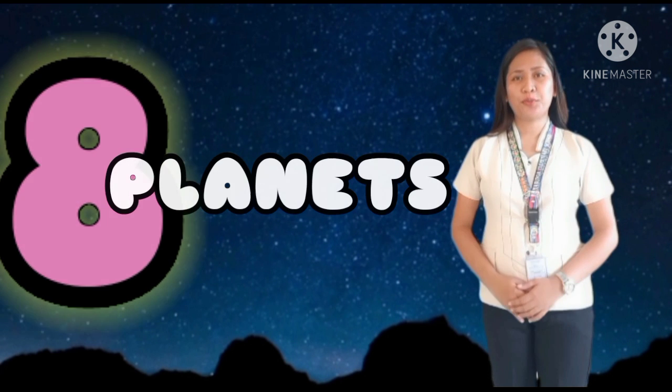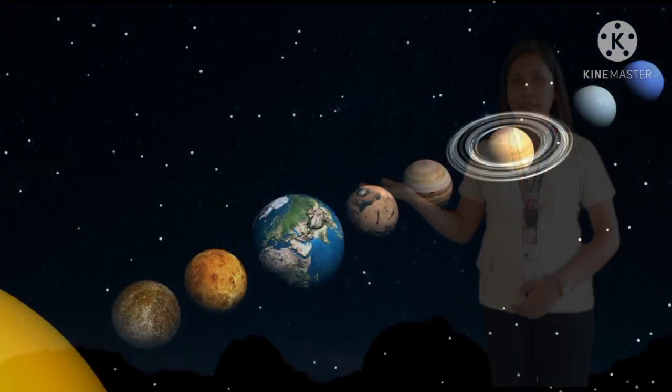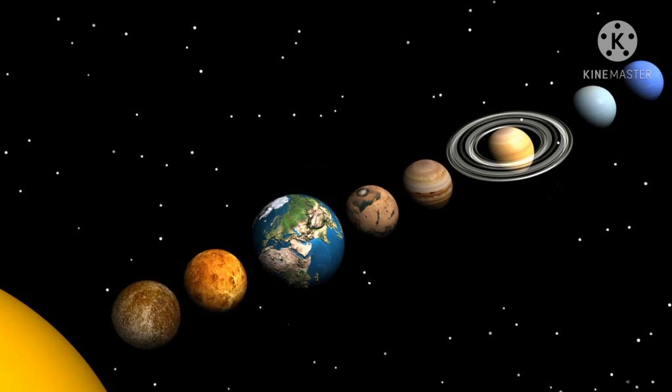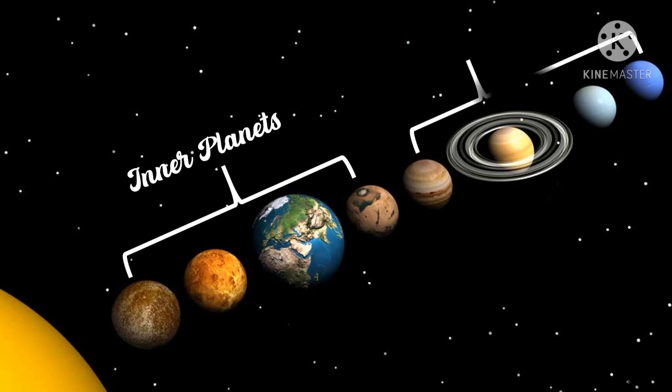There are eight planets in the solar system. All of these planets move constantly around their own star, the sun. The planets in our solar system are divided into two groups: the inner planets and the outer planets.